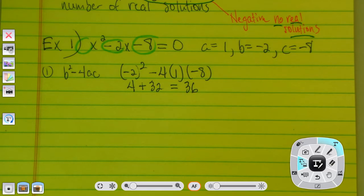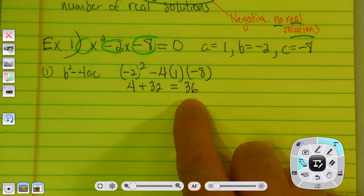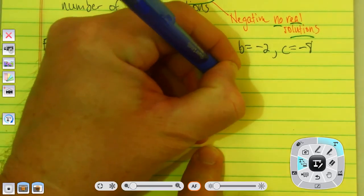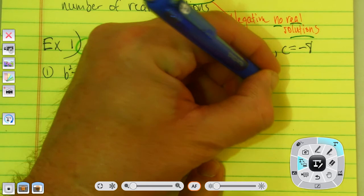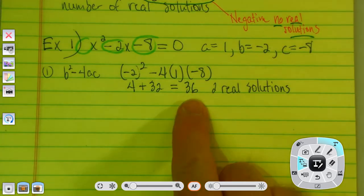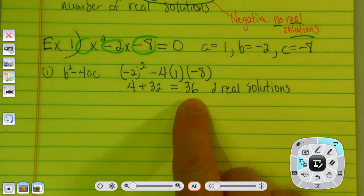How many solutions will there be? Your choices are 2, 1, or none. Is 36 positive, negative, or 0? Okay, so there'll be 2 real solutions. Because it's positive. If it had been negative 36, how many would there have been? No real solutions, right? If it had been 0, there had been 1 real solution. So, determining the number of solutions is really easy.